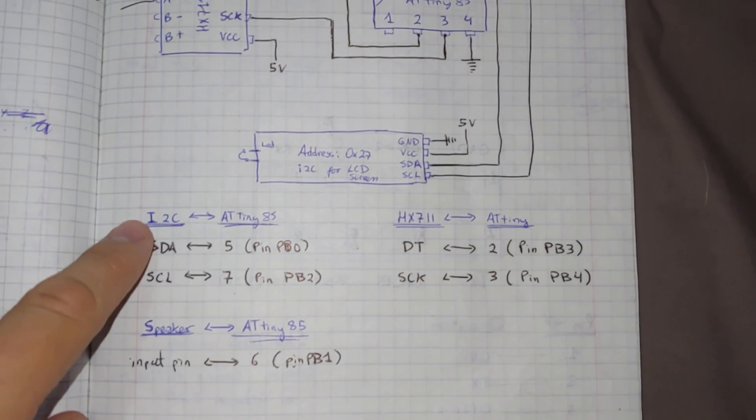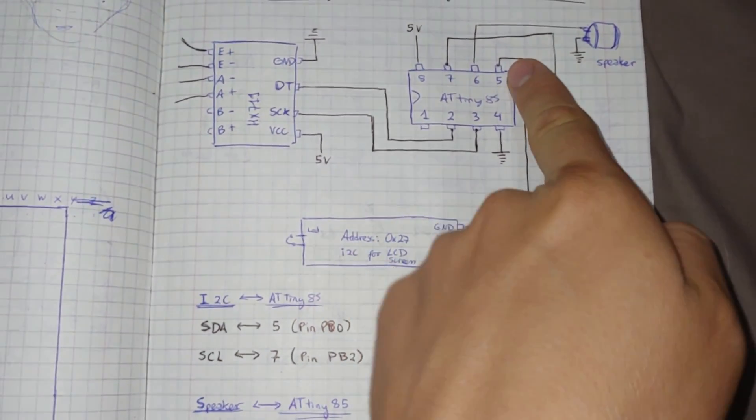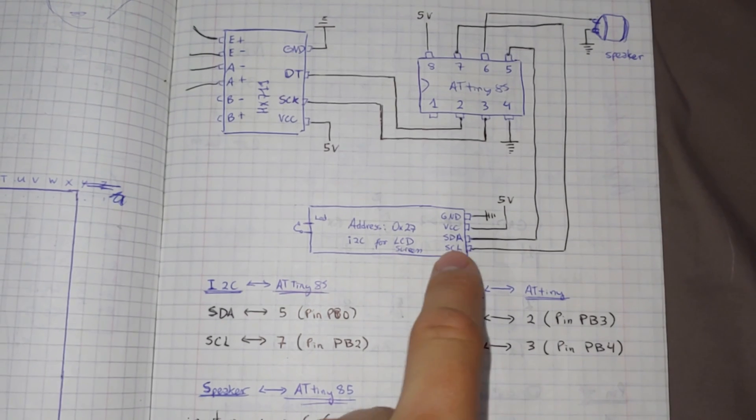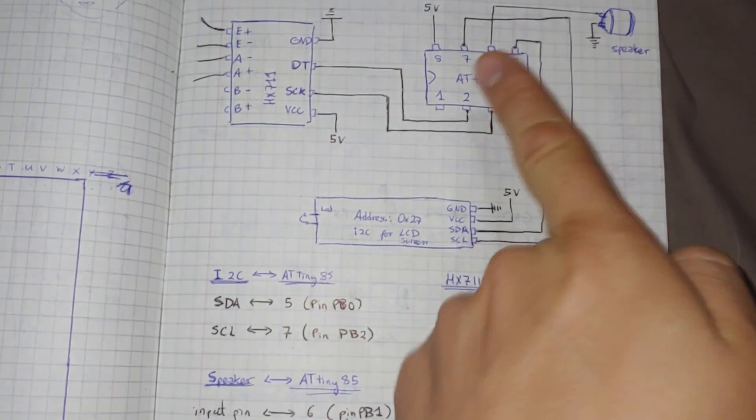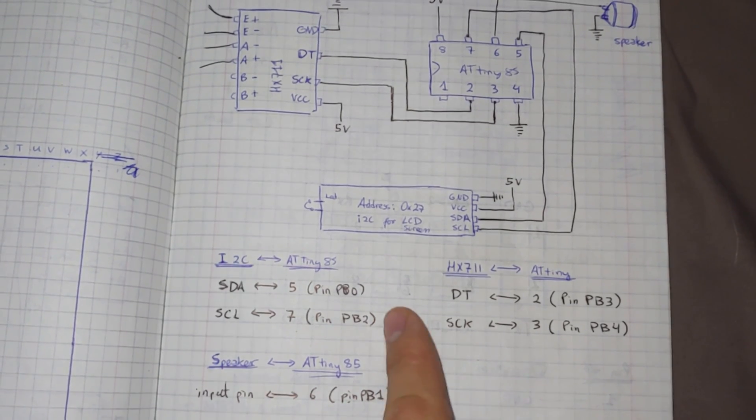Now, for the I2C module, we will connect SDA to physical pin 5, over here, and SCL to physical pin 7. However, in the code we will refer to them as 0 and 2. Just check for that.